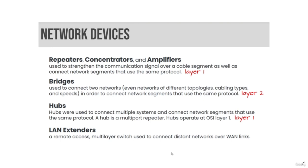Hubs were used to connect multiple systems and connect network segments that use the same protocol. A hub is a multi-port repeater and operates at OSI layer 1. LAN extenders are remote access multi-layer switches used to connect distant networks over a WAN link.